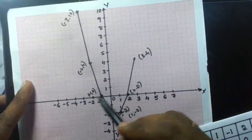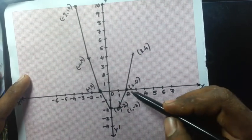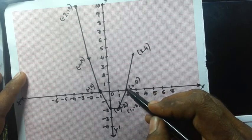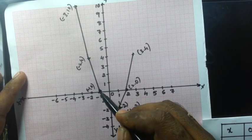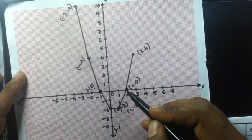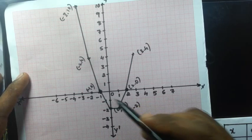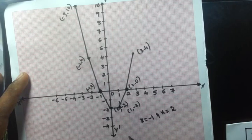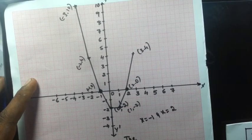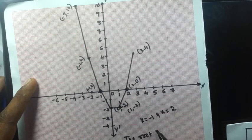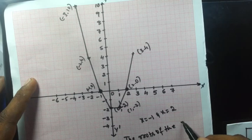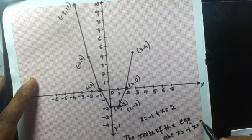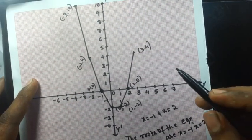This curve is called a parabola. This parabola is intercepted on the x-axis — that means it intersects the x-axis at two different points: one at plus 2 and another at minus 1. These two points — x = minus 1 and x = 2 — are the roots of the quadratic equation. The roots of the given quadratic equation are x = minus 1 and x = 2.